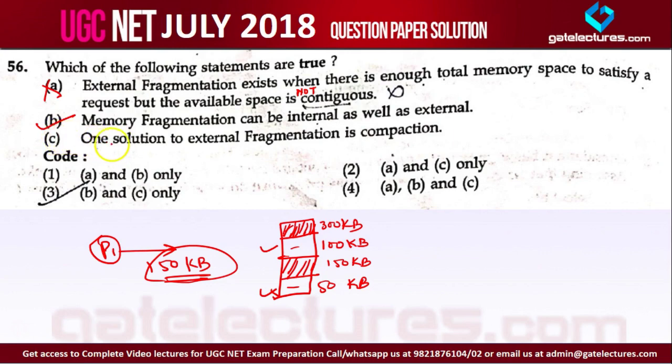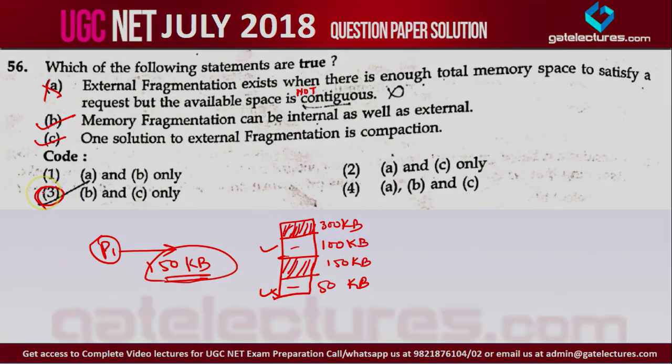Statement C: One solution to external fragmentation is compaction — this is also true. So options B and C are correct, making option 3 the right answer for this question.